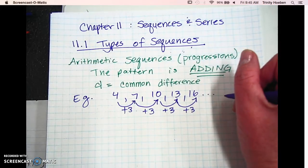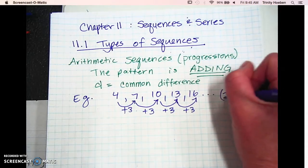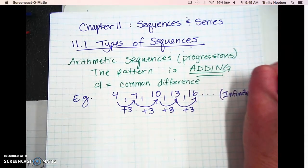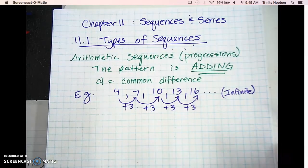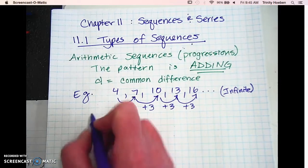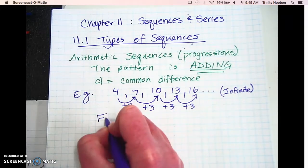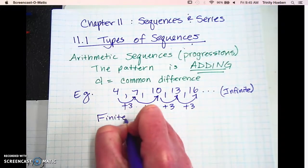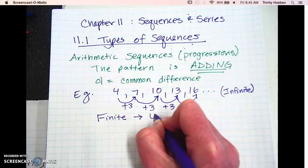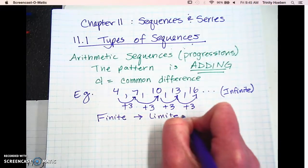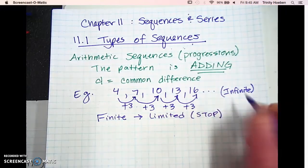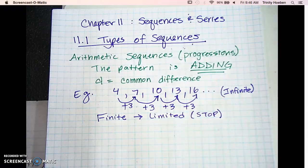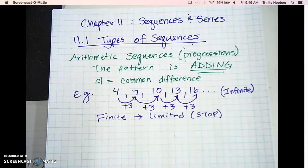If you have this dot dot dot at the end, it's called infinite. And that means it's going to keep going and going and going, right? So if you have a finite, it's going to be limited or it's going to stop at some point.